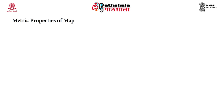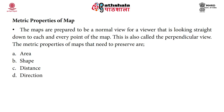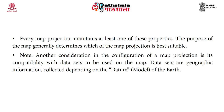Next, we will talk about the metric properties of the map. Maps are prepared for a normal view for a viewer looking straight down at each point — also called the perpendicular view. The metric properties that need to be preserved are area, shape, distance, direction, bearing, and scale. Every map projection maintains at least one of these properties. The purpose of the map generally determines which projection is best suitable.